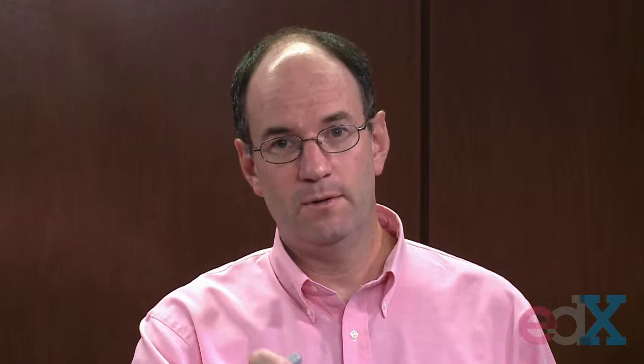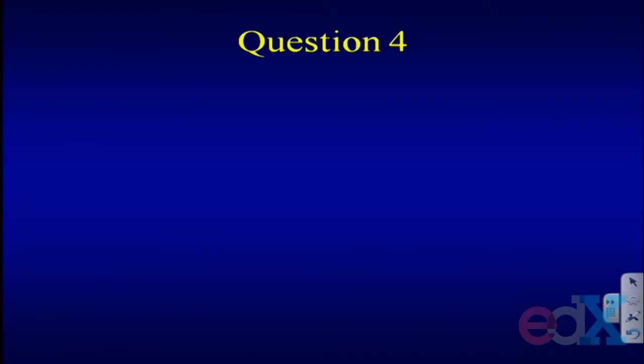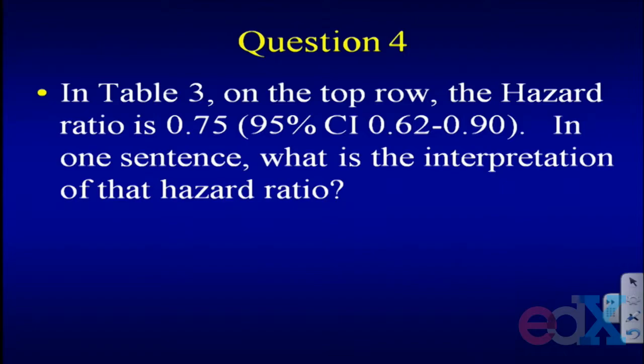Question four is an interpretation question. I want you to take Table 3, which is where I got the numbers to make that figure. On the top row there's a hazard ratio of 0.75. In one sentence, what is the interpretation of that hazard ratio? What does 0.75 mean when thinking about the group with a lower risk of diabetes? It should just be a one-sentence answer — not a whole paragraph.